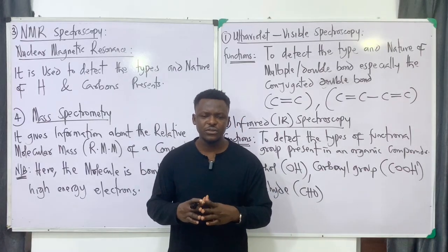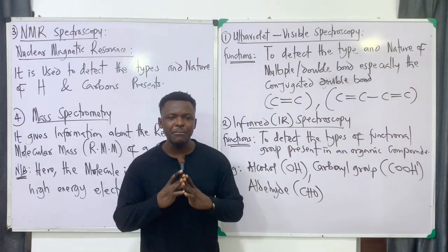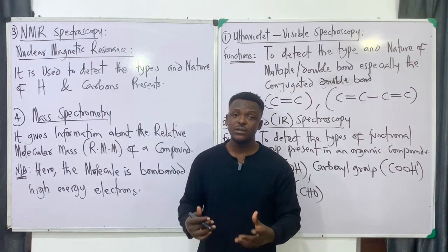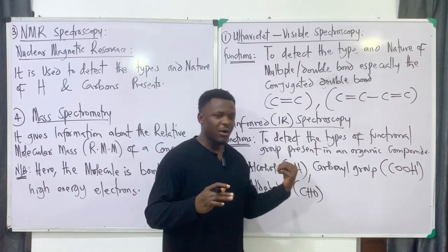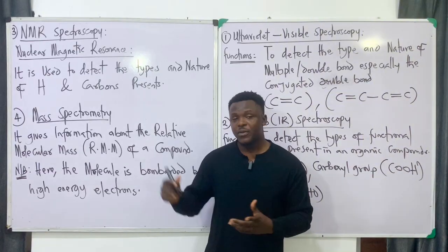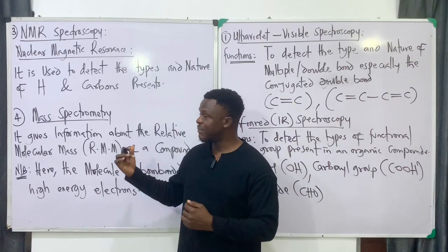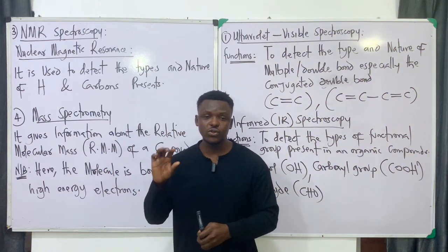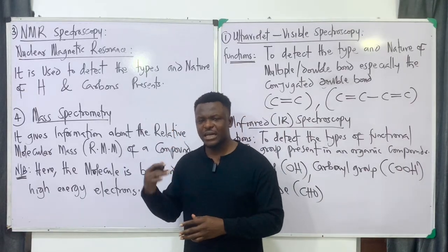To summarize: UV visible gives information about the type and nature of double bonds, especially conjugated double bonds. Infrared gives information about the type of functional group present, such as OH or carboxyl group. NMR gives information about the type and nature of hydrogens and carbons present. Mass spec gives information about the relative molecular mass, and involves high-energy electron bombardment of the molecule.